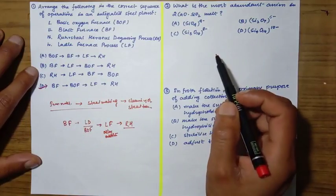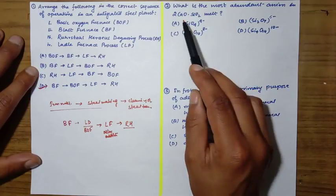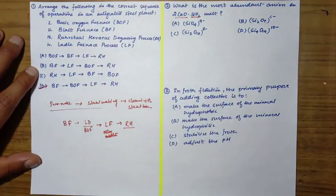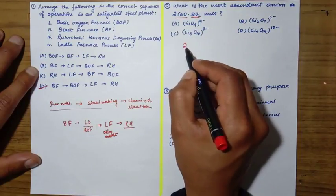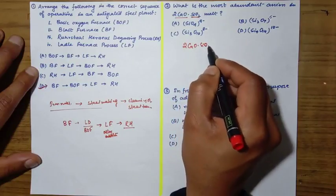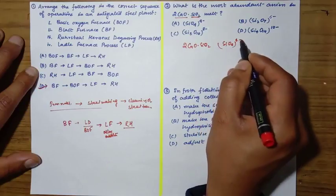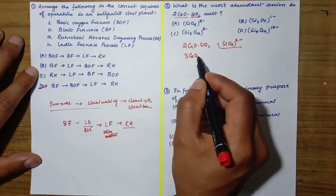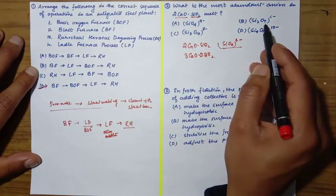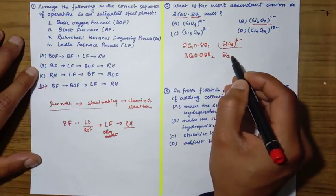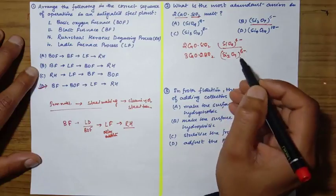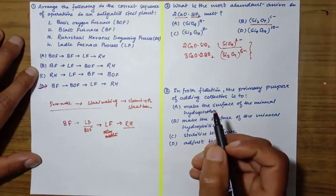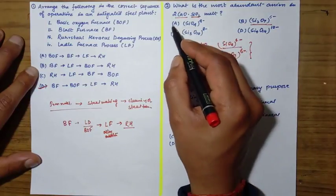Second question: what is the most abundant anion in 2CaO·SiO2? In 2CaO·SiO2, you have to remember that SiO4^4- anions are present. If you increase the calcium content to 3CaO·SiO2, then different anions are present. The correct answer is SiO4^4-.